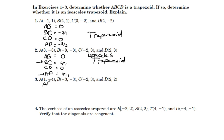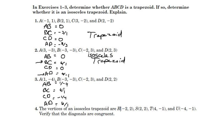Let's look at number three: AB, BC, CD, and AD. The slope of AB is one over negative four. The slope of BC is six over one. Slope of CD is negative one over four. Slope of AD is six over one. So we have both pairs of parallel sides congruent — that would make it not a trapezoid; it's simply a parallelogram.